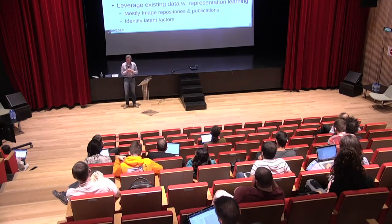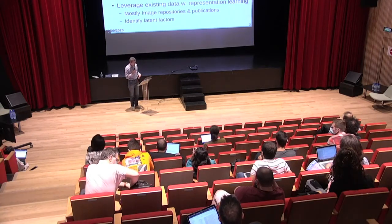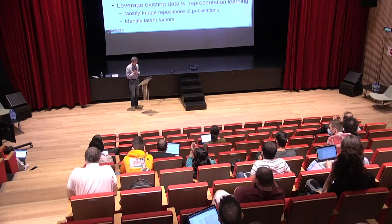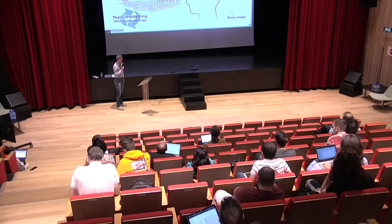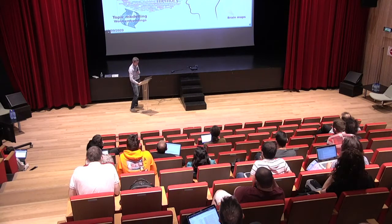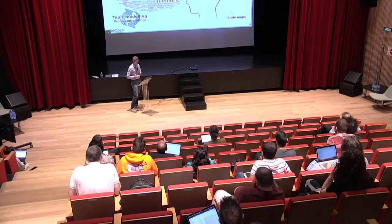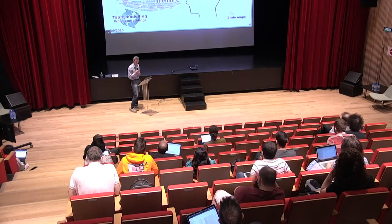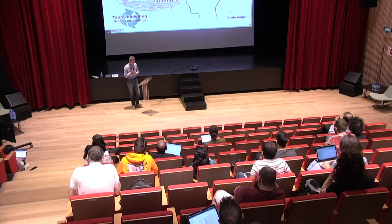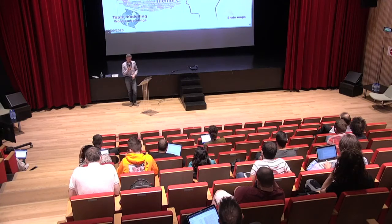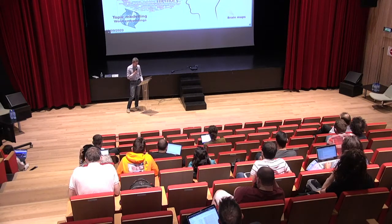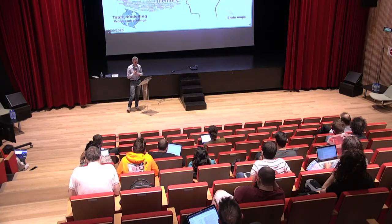Let's leverage existing data and representation learning to achieve this goal. We'll use image repositories and publication repositories to identify latent factors across this data. If you take all descriptions of behavior, the idea is to find some semantic entities, some links between concepts, and to define dimensions that are relevant for description. Topic modeling and word embeddings are techniques that can be used to do that, implicitly or explicitly. On the other hand, measurements of brain activity from cognitive neuroscience labs with different modalities can be related to brain representations using latent factor models.